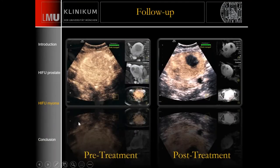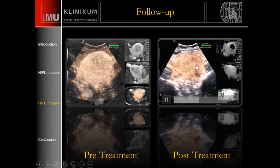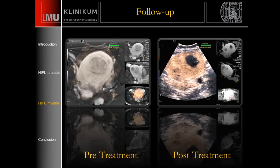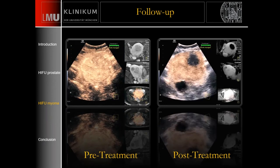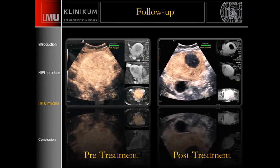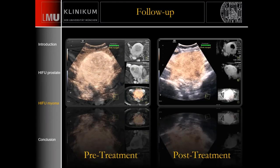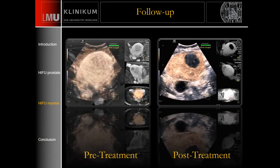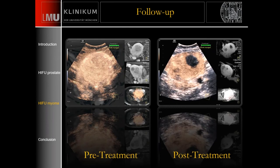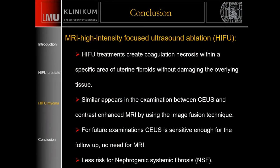Comparing side by side before and after treatment directly demonstrates the success. An important consideration: once you inject MRI contrast agents, you are not allowed to continue treatment. If you use an ultrasound contrast agent instead, you can still proceed with treatment if it was not yet successful. In conclusion, HIFU therapy creates a large necrosis, visible as a perfusion defect on contrast, similar to MRI. The risk of nephrogenic systemic fibrosis remains low.